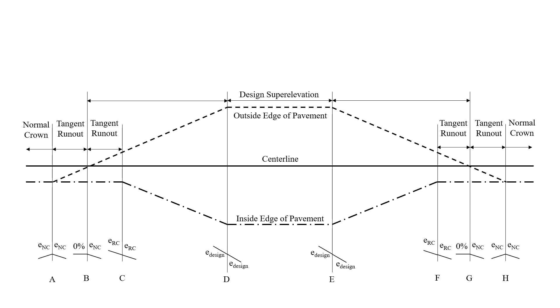On these types of problems, it's important that we start with a drawing to make sure we understand what we're given and what we're looking for. We're starting with our TS point, that's the tangent to spiral, and that's station 43 plus 12.66.